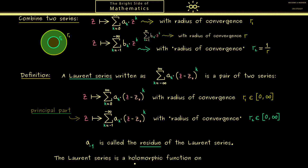Another important fact is that a Laurent series is always a holomorphic function defined on its ring. Formally, the domain is all complex numbers z satisfying that the absolute value of (z minus z_0) is less than r1 and greater than r2. The worst case is the empty set, when r2 is bigger than r1, and the best case is almost the entire complex plane. By definition, the expansion point z_0 is always missing from the domain.